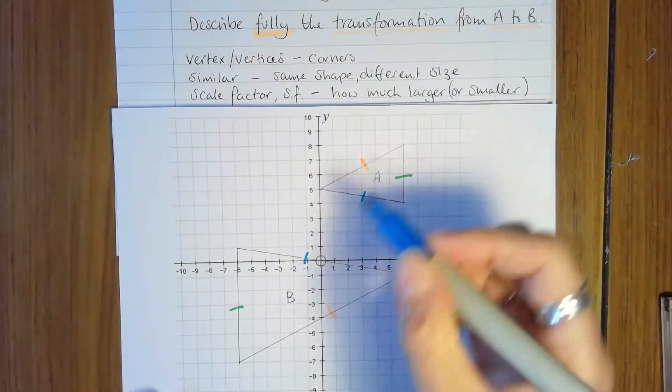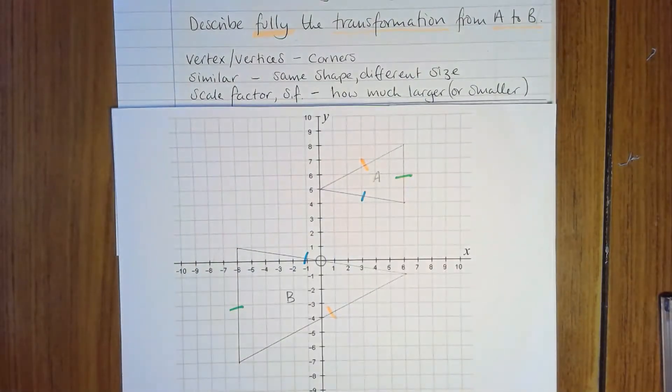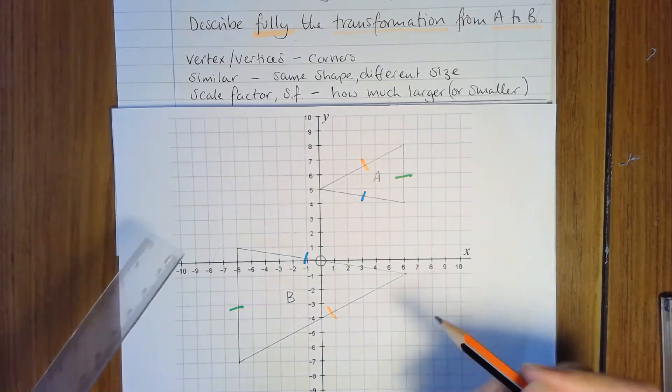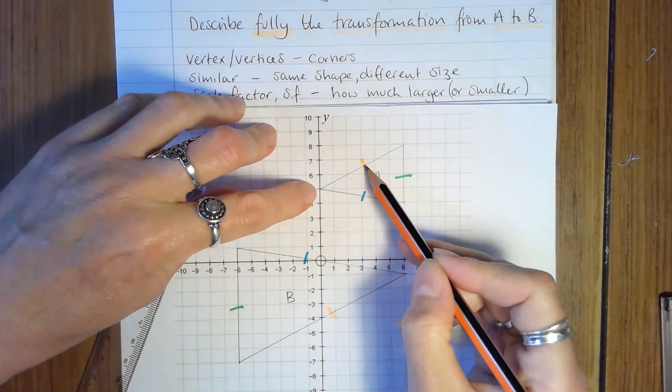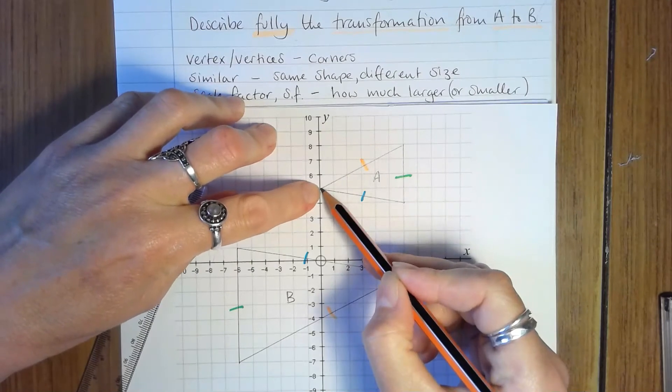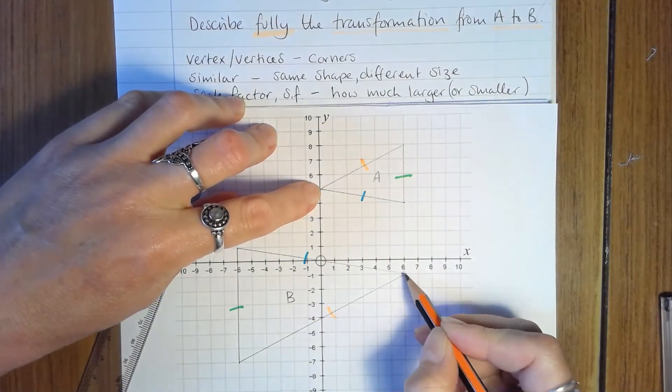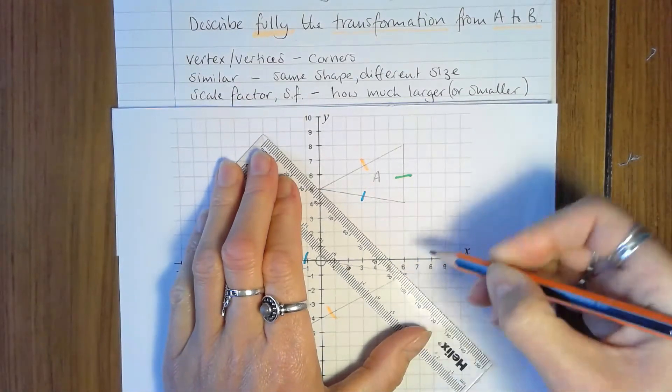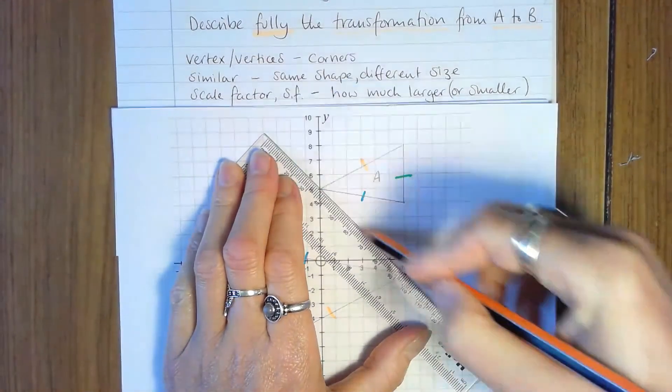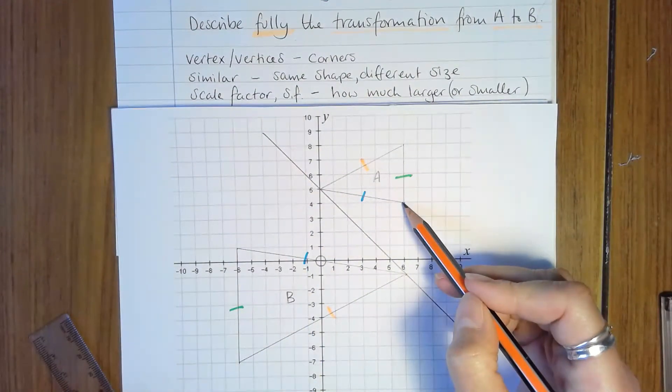So now that we've done that we can easily identify the corresponding vertices. This vertex between the orange and blue sides on here corresponds to the vertex between the orange and blue sides here. The vertex between the green and blue.